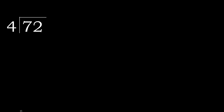72 divided by 4. 7 is not less, therefore with 7: 4 multiplied by which number is nearest to 7 but not greater? 4 multiplied by 2 is 8 — 8 is greater. Multiply by 1 is 4, which is not greater. 7 minus 4 is 3.